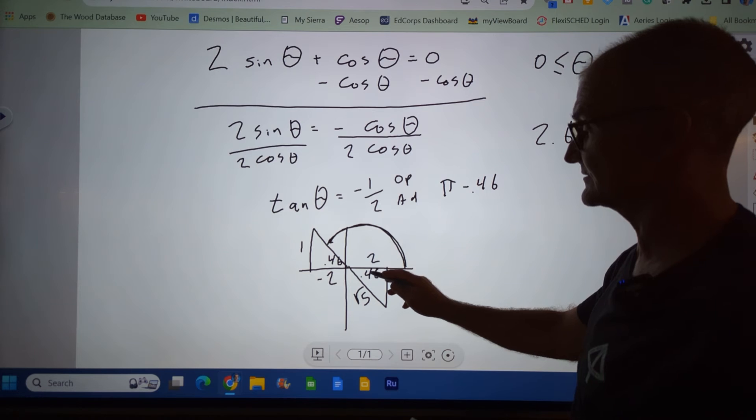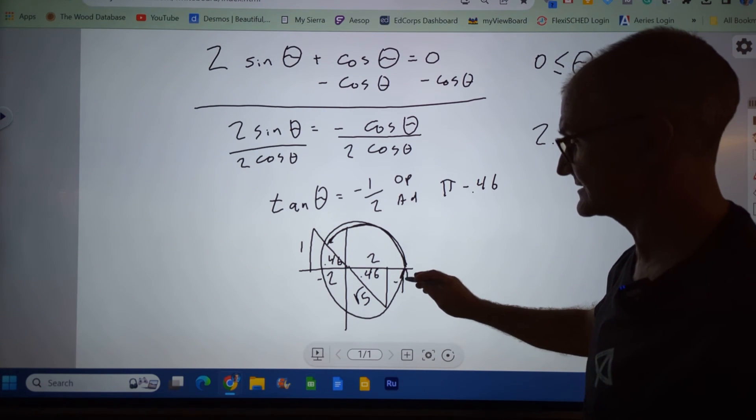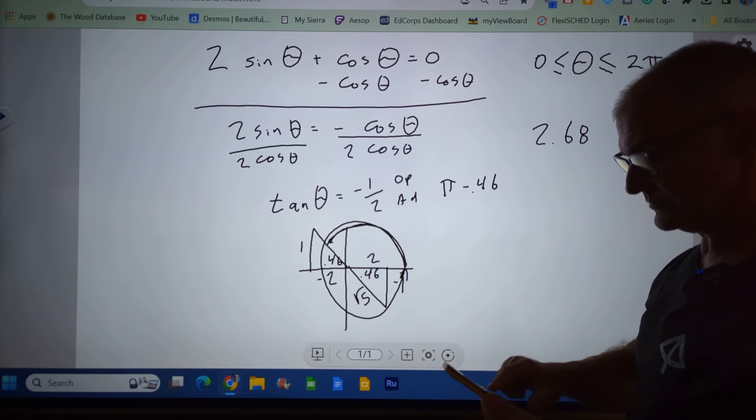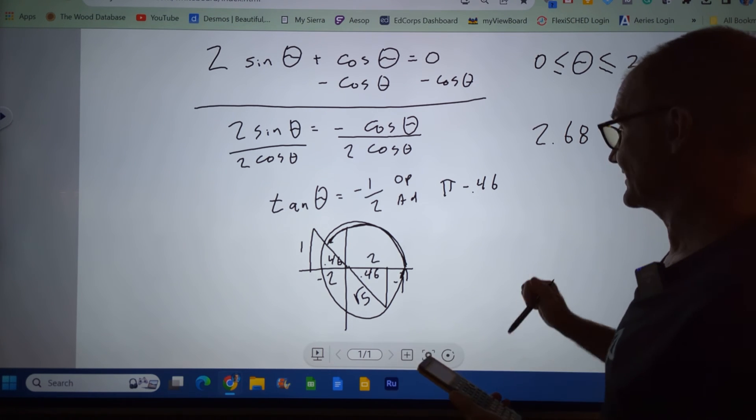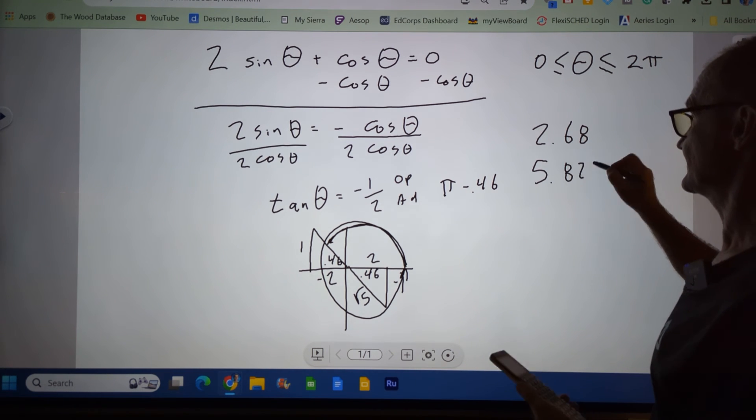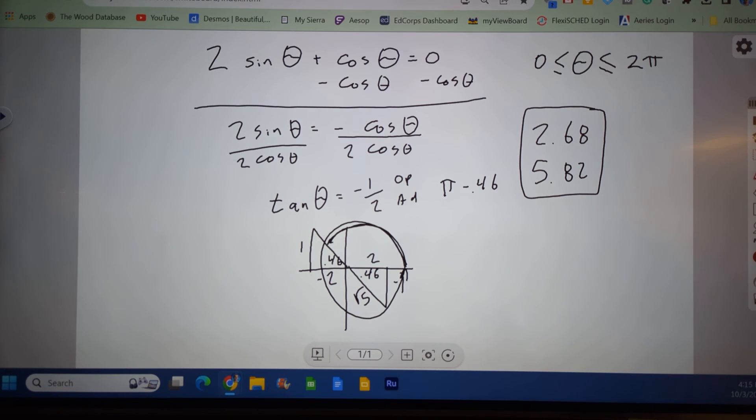This reference angle is also 0.46. It is going to be 0.46 before 2 pi. So I'm going to go 2 pi minus 0.46. You get 5.82. And those are my two solutions within this domain.